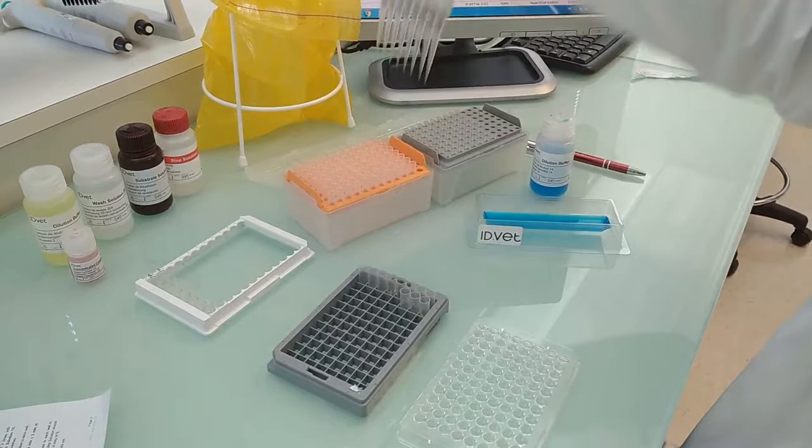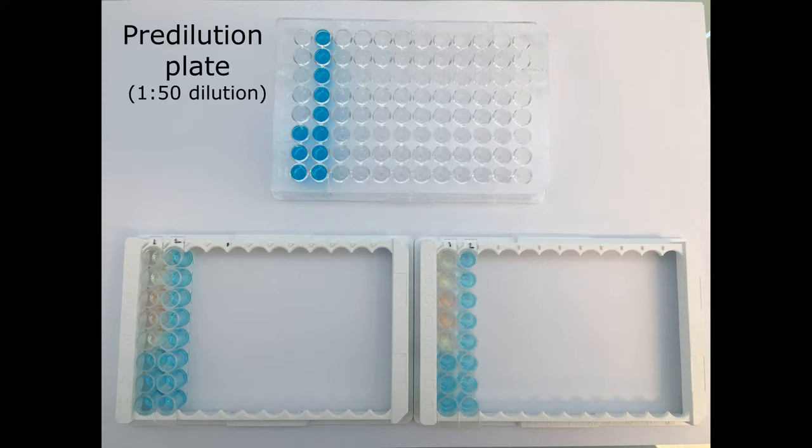At this step, the samples are 1 to 50 diluted. Thanks to standardized protocols across the avian ELISA range, you may use the same predilution plate to test for multiple diseases.